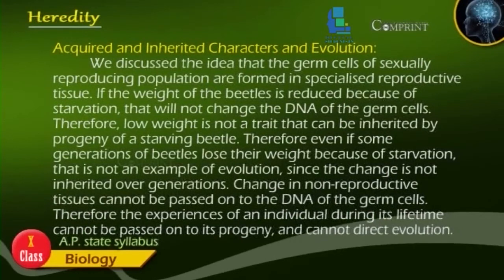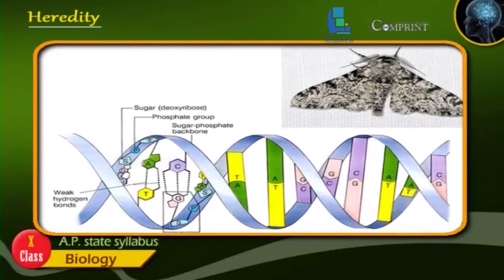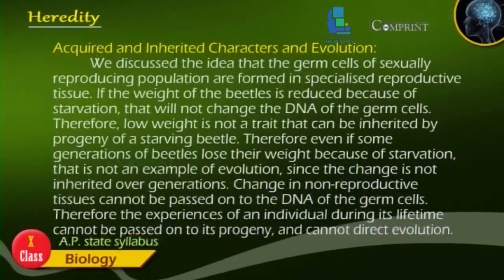Acquired and Inherited Characters and Evolution. The germ cells of sexually reproducing populations are formed in specialized reproductive tissue. If the weight of beetles is reduced because of starvation, that will not change the DNA of the germ cells. Therefore, low weight is not a trait that can be inherited by the progeny of a starving beetle. Even if some generations of beetles lose their weight because of starvation, that is not an example of evolution, since the change is not inherited over generations. Change in non-reproductive tissues cannot be passed on to the DNA of the germ cells. Therefore, the experiences of an individual during its lifetime cannot be passed on to its progeny and cannot direct evolution.